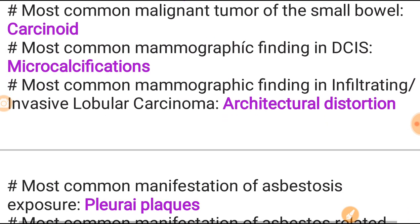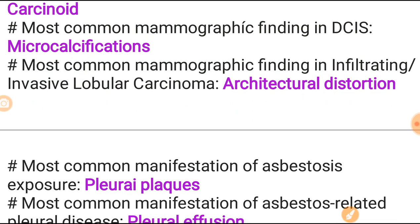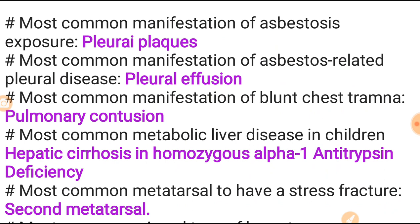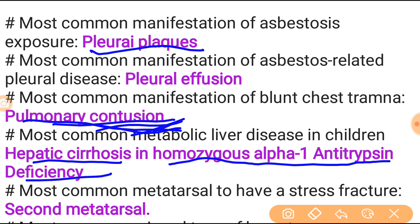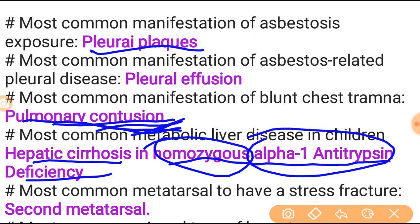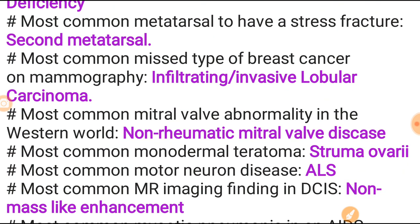Most common mammographic finding in infiltrating invasive lobular carcinoma is architectural distortion. Most common manifestation of asbestosis exposure is pleural plaques. Most common manifestation of asbestos-related pleural disease is pleural effusion. Most common manifestation of blunt chest trauma is pulmonary contusion - remember contusion. Most common metabolic liver disease in children is hepatic cirrhosis in homozygous alpha-1 antitrypsin deficiency. Most common metatarsal to have a stress fracture is the second.